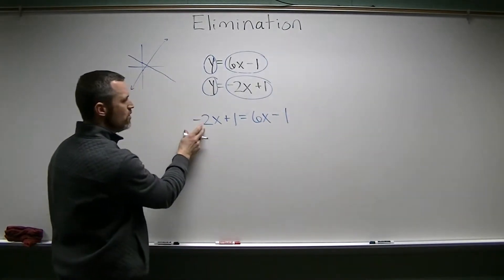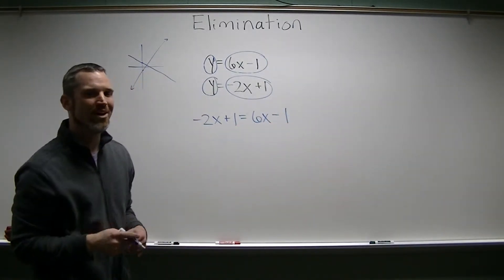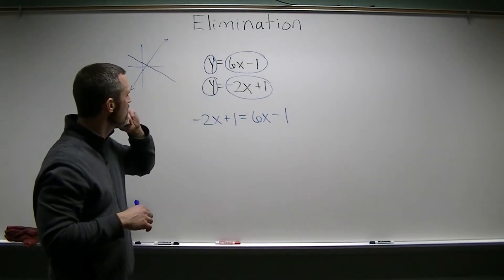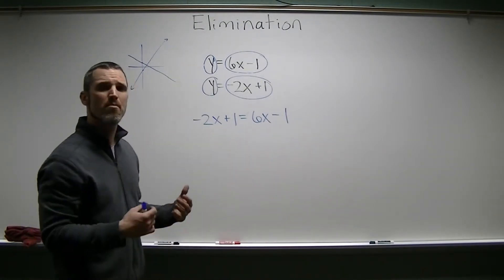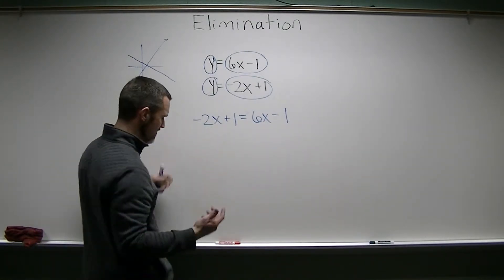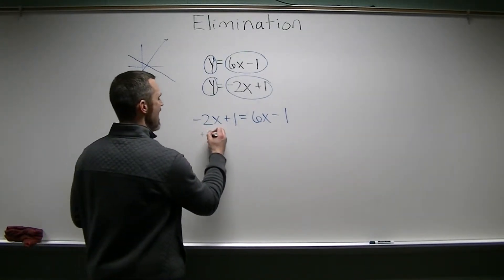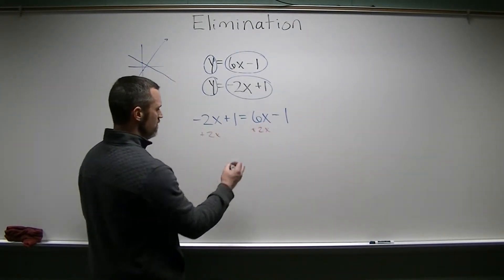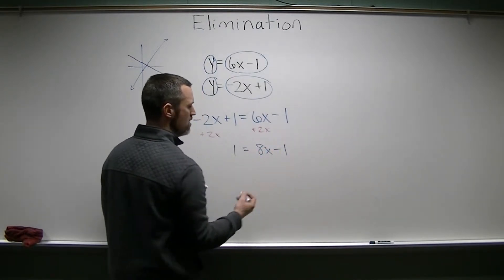So we get negative 2x plus 1 equals 6x minus 1. One variable, you know, linear, we made these two linear equations into one variable equation. Beautiful, easy to solve. I want to get rid of that negative 2x. I just don't like the negatives. So I'm going to add 2x to both sides, and we're going to get 1 equals 8x minus 1.